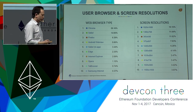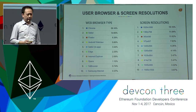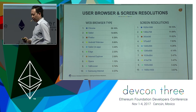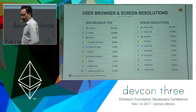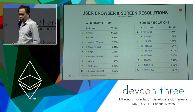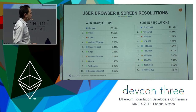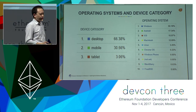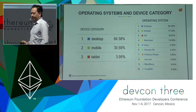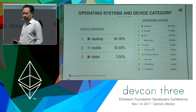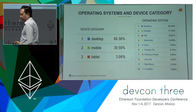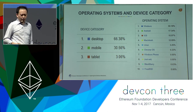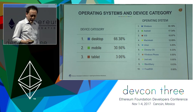For the user interface analytics, we look at two data points: user browser and screen resolutions. As for web browser type, Chrome represents the largest share at 60%, followed by Safari and Firefox. As for screen resolutions, we normally see users interacting with larger screen resolutions, normally indicating a desktop or laptop interface. This is further corroborated by the data showing that around two-thirds of users are using a desktop interface, and around 30% using a mobile interface. For operating systems, around 50% of users are using Windows, followed by Android, iOS, and Macintosh in similar proportions.